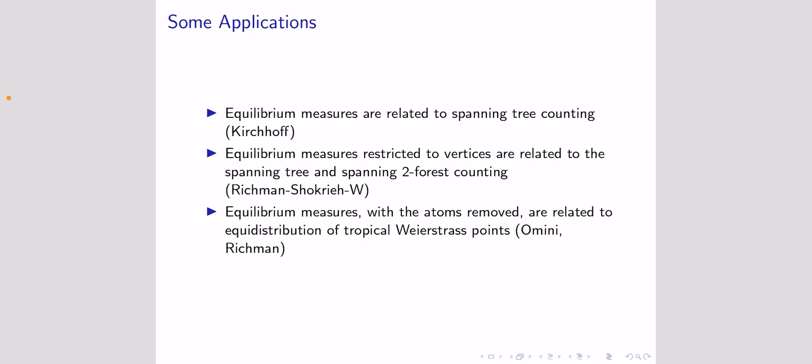Beyond this, there are also some further applications in upcoming papers where we restrict to metric graphs that are trees, and then look at certain sets of points on the tree and relate the equilibrium measure — with support restricted to those points — to the negative of the distance matrix at those points.